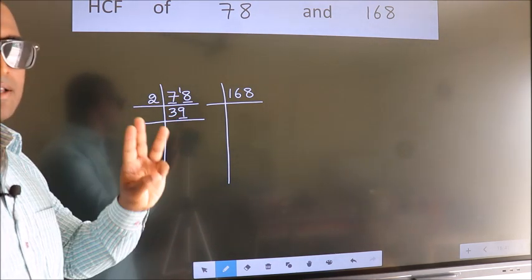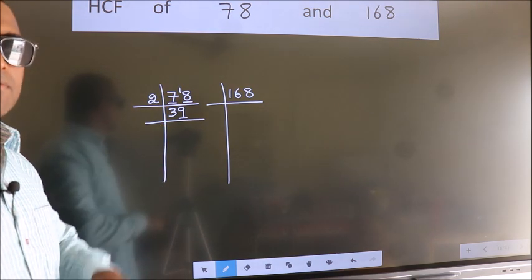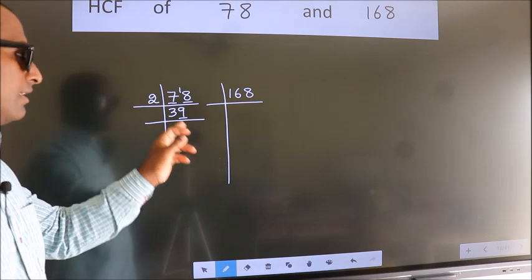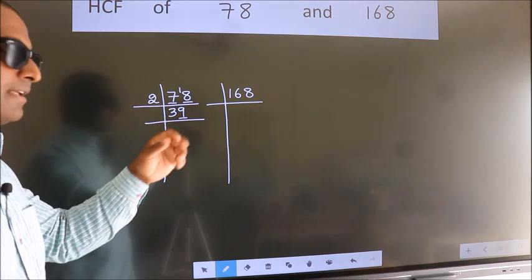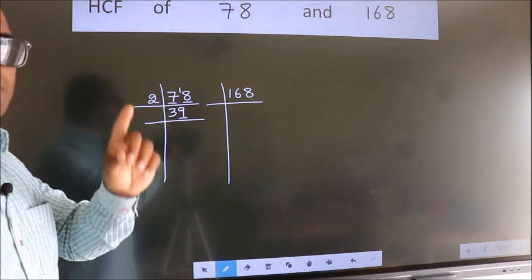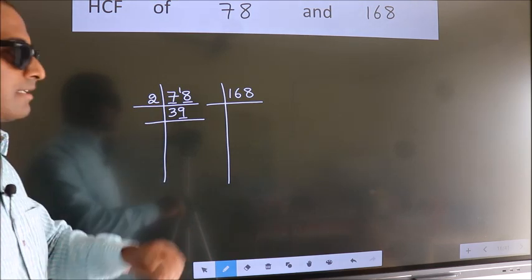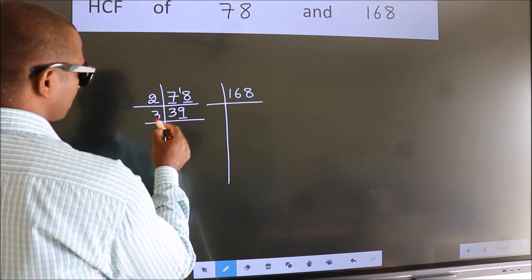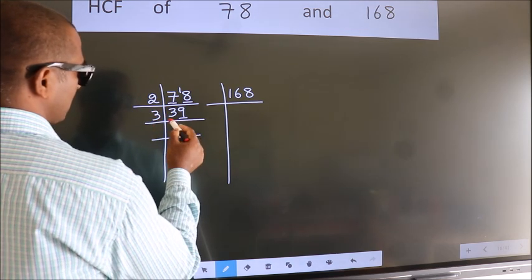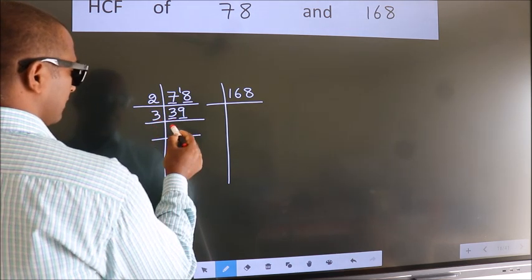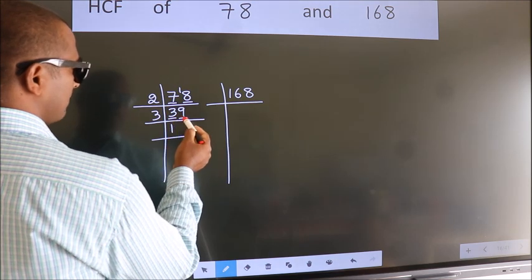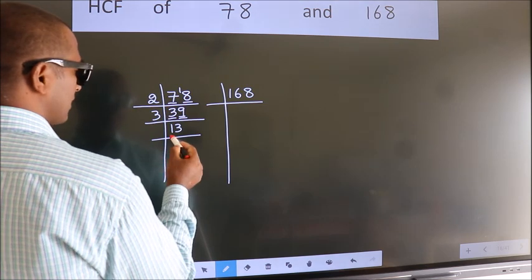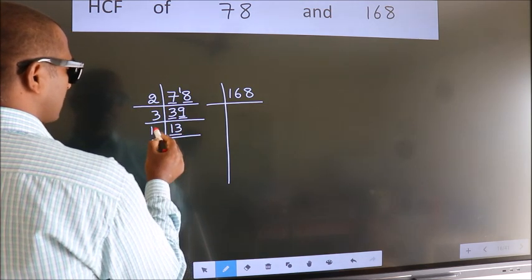Next prime number 3. To check divisibility by 3, we should add the digits. 3 plus 9, we get 12. Is 12 divisible by 3? Yes. So this number is also divisible by 3. So take 3. First number 3. When do we get 3 in 3 table? 3 once 3. The other number 9. When do we get 9 in 3 table? 3 threes is 9. Now 13 is a prime number. So 13 once 13.